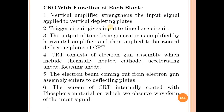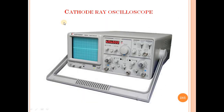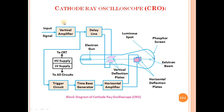Now we will see the function of each block of the CRO. The blocks in the CRO are: the vertical amplifier, delay line, trigger circuit, time-based generator, and horizontal amplifier.